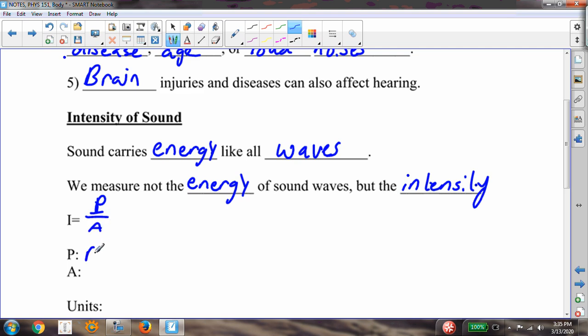So here, P is the power. A is the area. And power, if you remember, is energy per time. We had that back in a previous chapter. Energy per time.